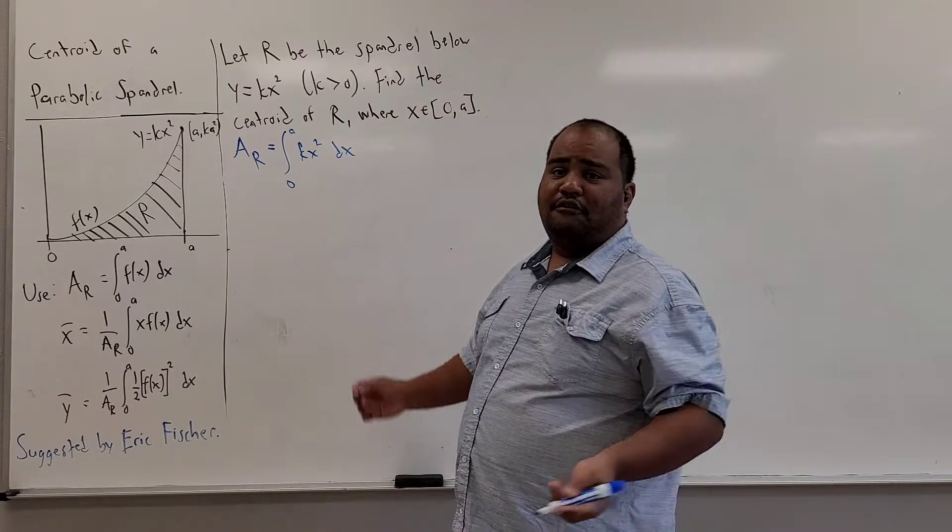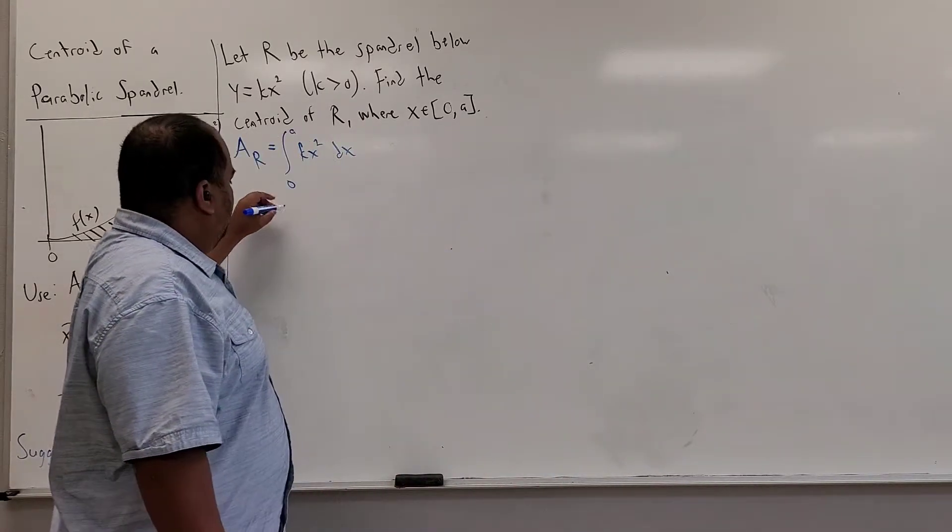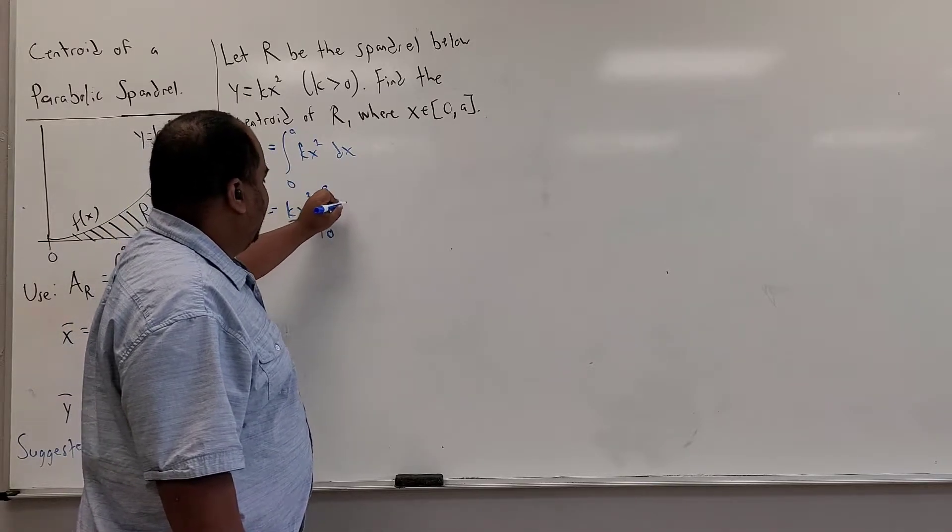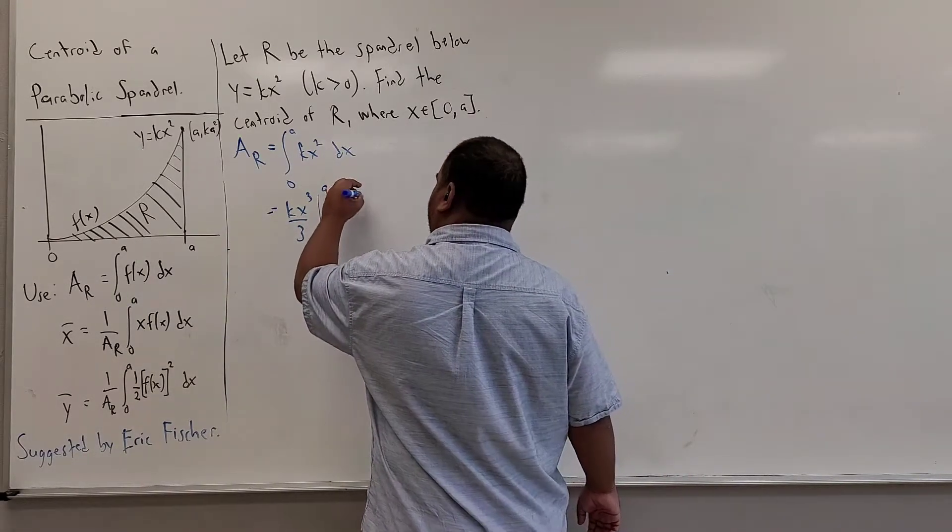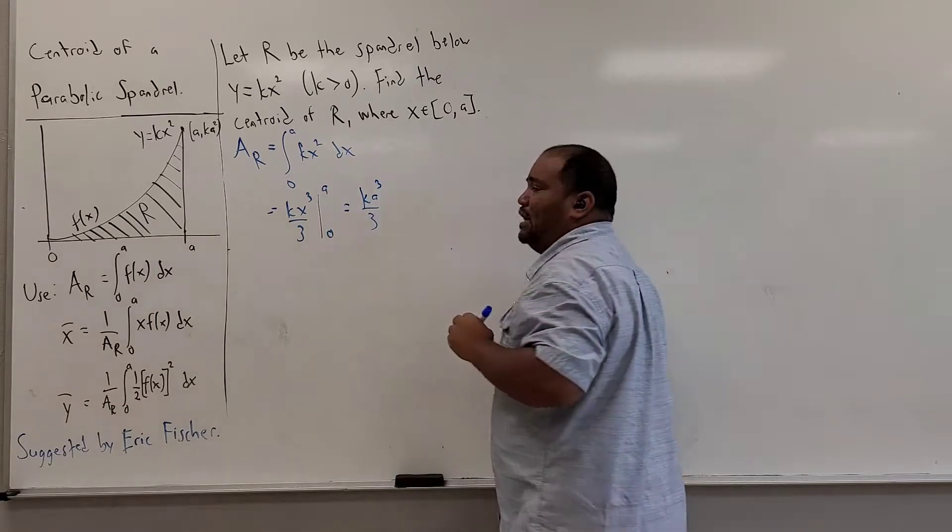Simple enough, this is just an application of the power rule, where we'll have kx cubed over 3 as my anti-derivative, evaluating between a and 0. And of course, you'll see that this vanishes with 0, so I get k a cubed over 3 as my area.